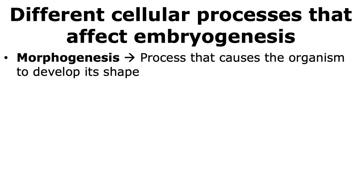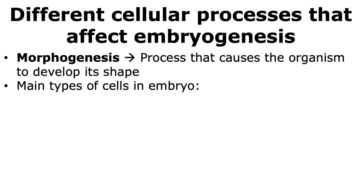Many different processes affect embryogenesis, and morphogenesis is the process that causes the organism to develop its shapes. For morphogenesis to occur, the cells of the embryo have to undergo different changes. But first, let's look at what the different types of cells in an embryo are.